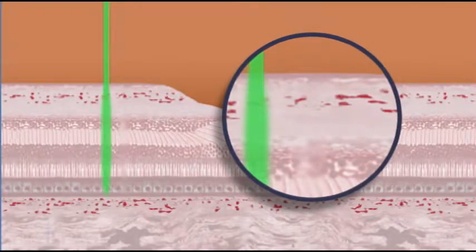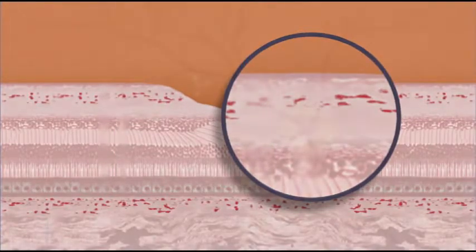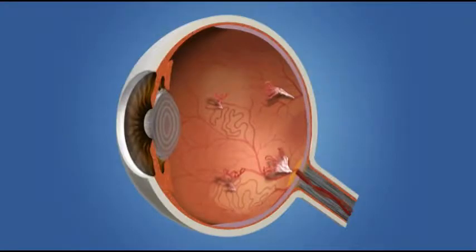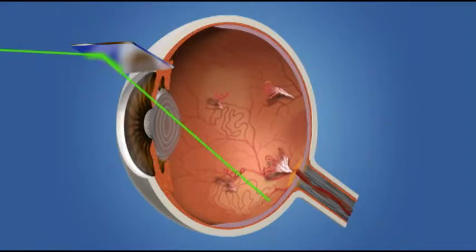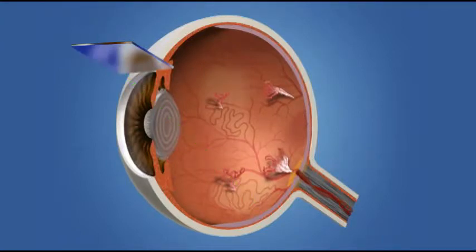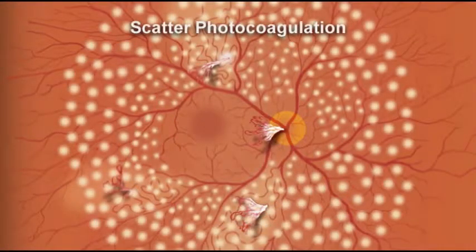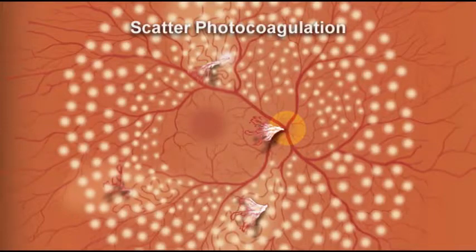The main goal of treatment is to seal off leaking blood vessels that interfere with proper function of the macula. With laser surgery for PDR, the laser is applied to the peripheral retina, avoiding the central macula. This laser treatment, called PRP or panretinal photocoagulation, also known as scatter photocoagulation, causes the blood vessels to shrink and often prevents them from growing again in the future. It also decreases the chances of the blood vessels bleeding into the vitreous or causing retinal detachment.